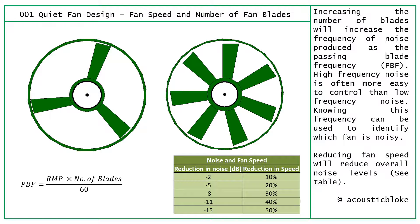The next thing we can do to control fan noise is simply to slow the fan down. The table indicates the likely reductions in noise level depending on what percentage we reduce the fan speed. For example, a 30% reduction in speed would equate to approximately an 8 dB reduction in total noise level.